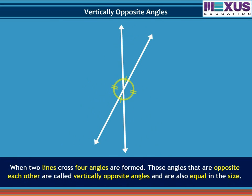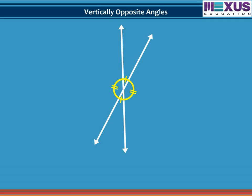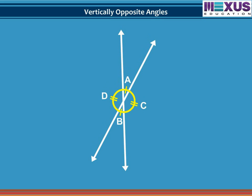When two lines cross, four angles are formed. Those angles opposite each other are called vertically opposite angles and are equal in size. In this figure, non-adjacent angles A and B, and angles C and D, are vertically opposite angles. The measure of angle A equals the measure of angle B, and the measure of angle C equals the measure of angle D. Vertical angles always share a common vertex, and the sum of two pairs of vertical angles with a common vertex is always 360 degrees.